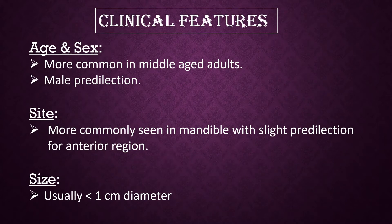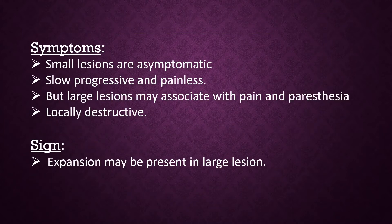Clinical features: It is more common in middle-aged adults with a male predilection. Site: More commonly seen in the mandible with a slight predilection for the anterior region. Size: It is usually less than 1 cm in diameter. Symptoms: Small lesions are asymptomatic, slow, progressive, and painless. But large lesions may be associated with pain and paresthesia, and are locally destructive.